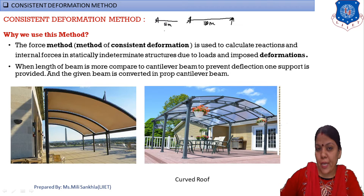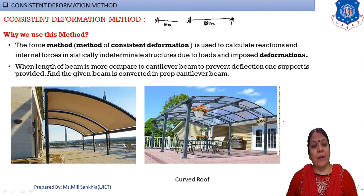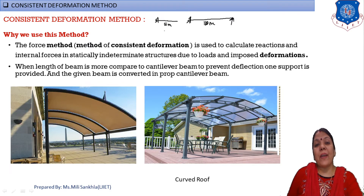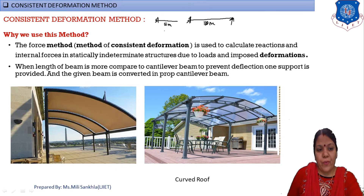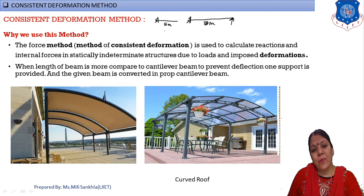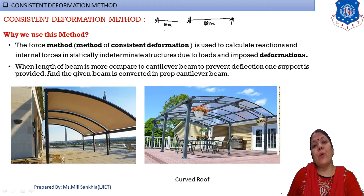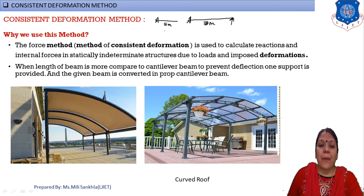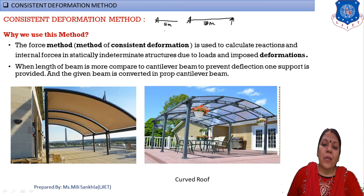For the consistent deformation method, we find out internal forces and support reactions for a prop cantilever beam. Here is a real-world example: a metal frame used for a parking shade. The beam has a fixed end and a hanging length; to prevent deflection, a support is provided, converting it into a prop cantilever beam. A second example is a curved roof where steel pillars are fixed and supports at the free end prevent deflection.